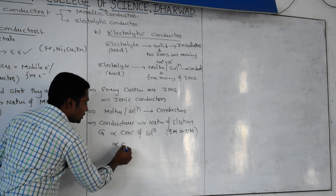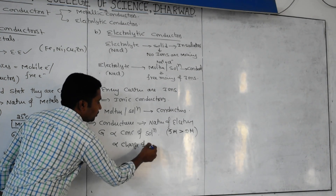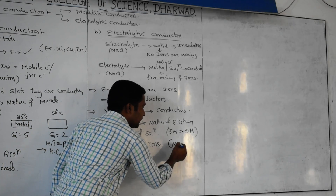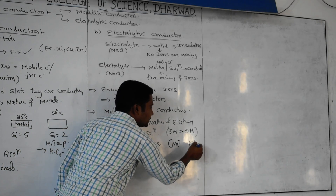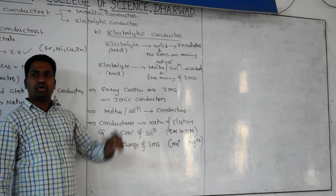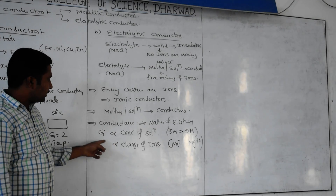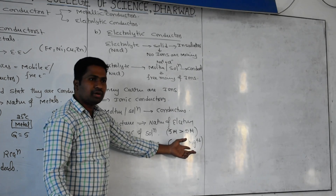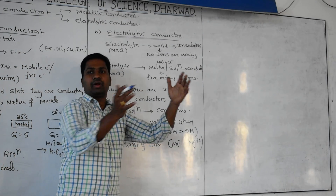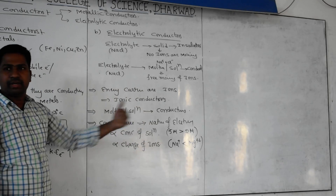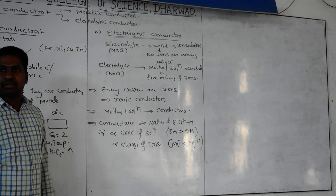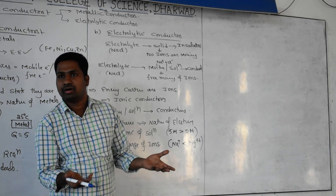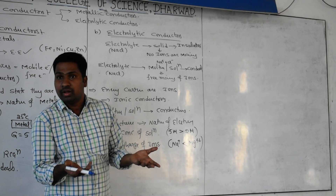Conductance is also directly proportional to the charge of ions. For example, if you have Na+ and Mg2+, the one with higher charge carries more electrons and has more conductance. Between NaCl and MgCl2 solutions, MgCl2 has more conductance because of the higher charge on Mg2+.